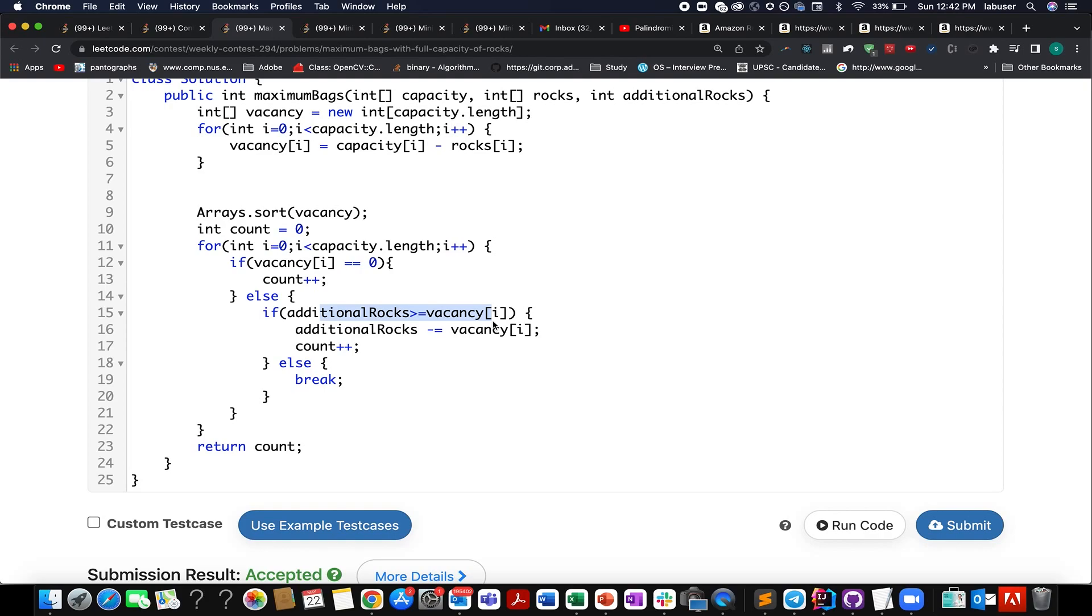If this condition is true, then I allocate these many rocks to that particular bag. I reduce my additional rock count appropriately and I increment my count variable because this bag has turned empty. Otherwise, if this condition is not met, I break out of the loop and simply return the count variable.